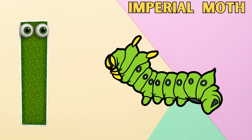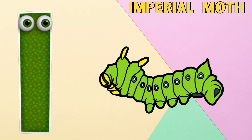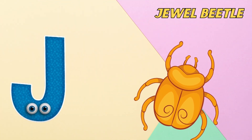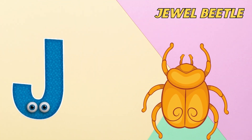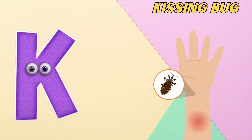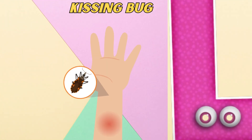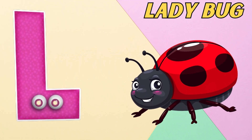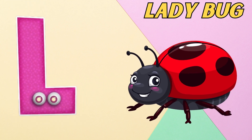I is for imperial moth. i, i, imperial moth. J is for jewel beetle. j, j, jewel beetle. K is for kissing bug. k, k, kissing bug. L is for ladybug. l, l, ladybug.